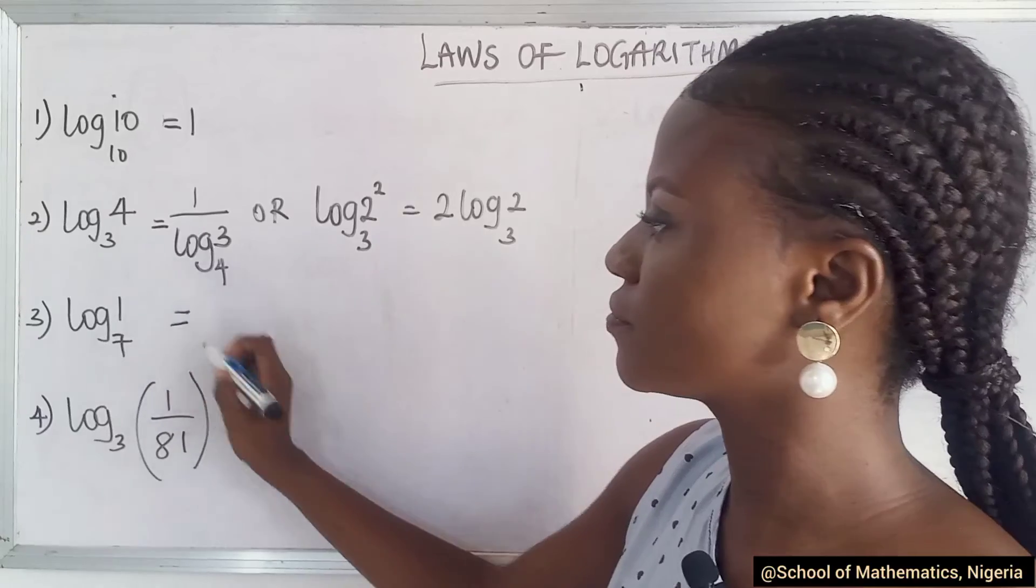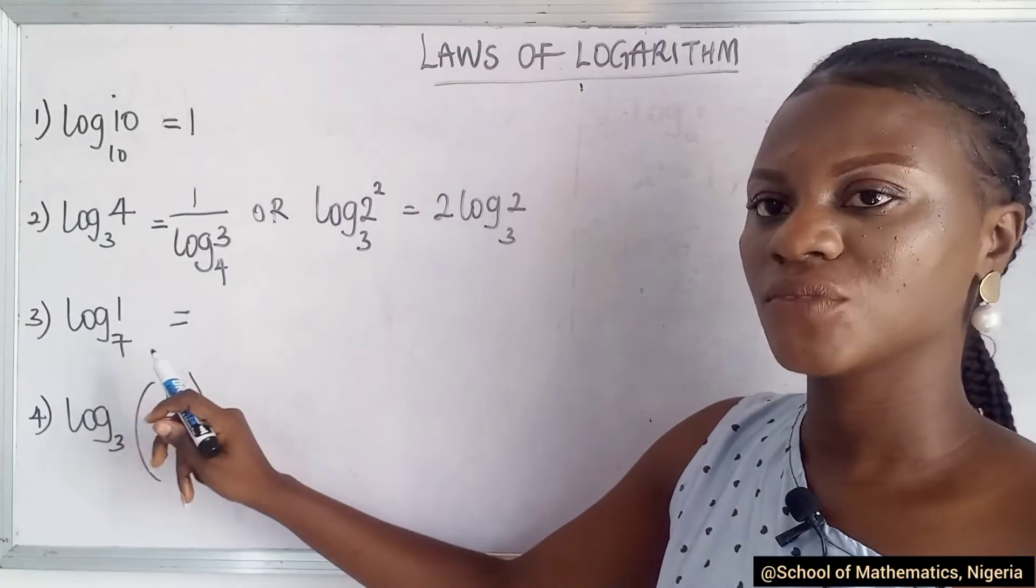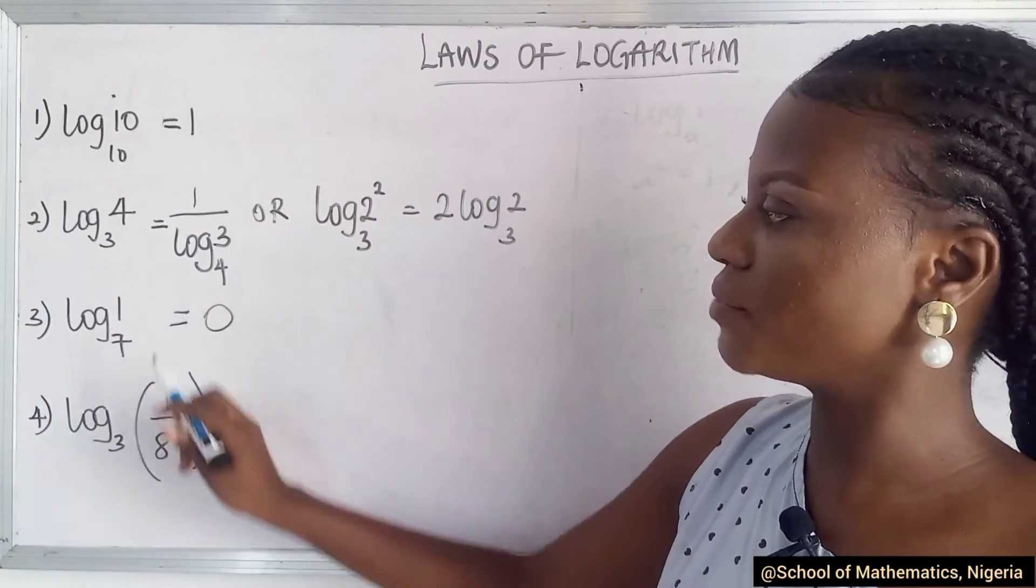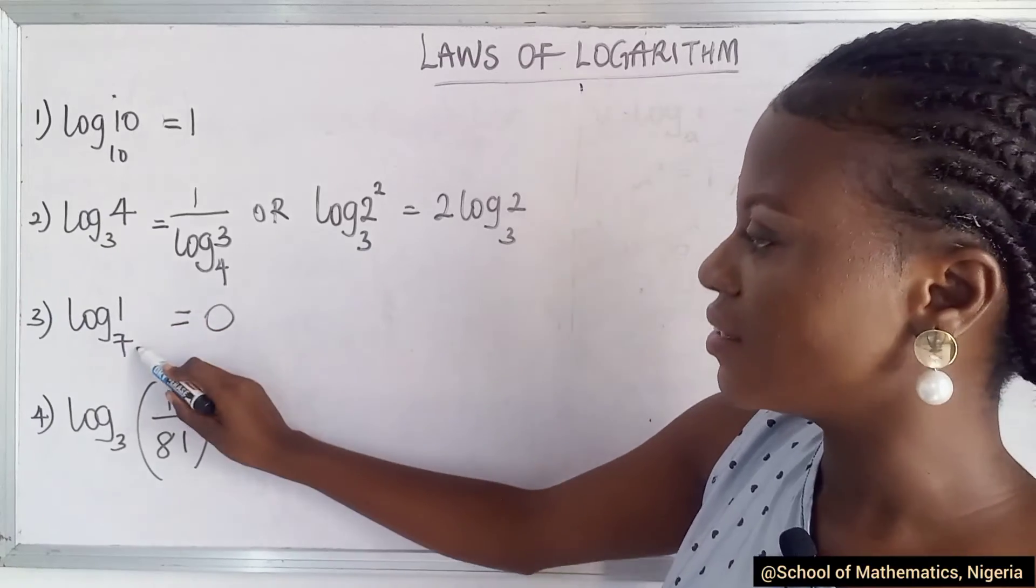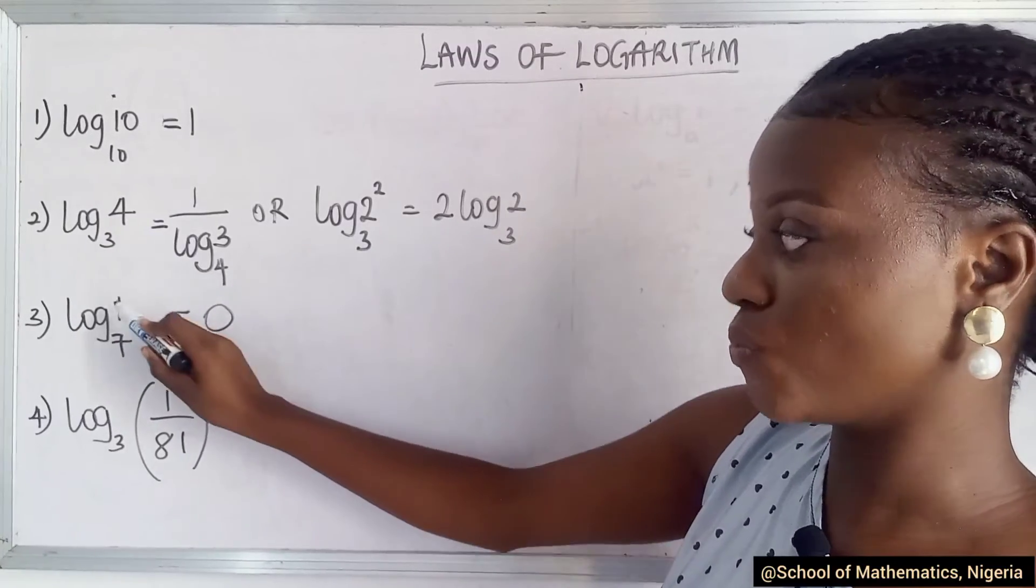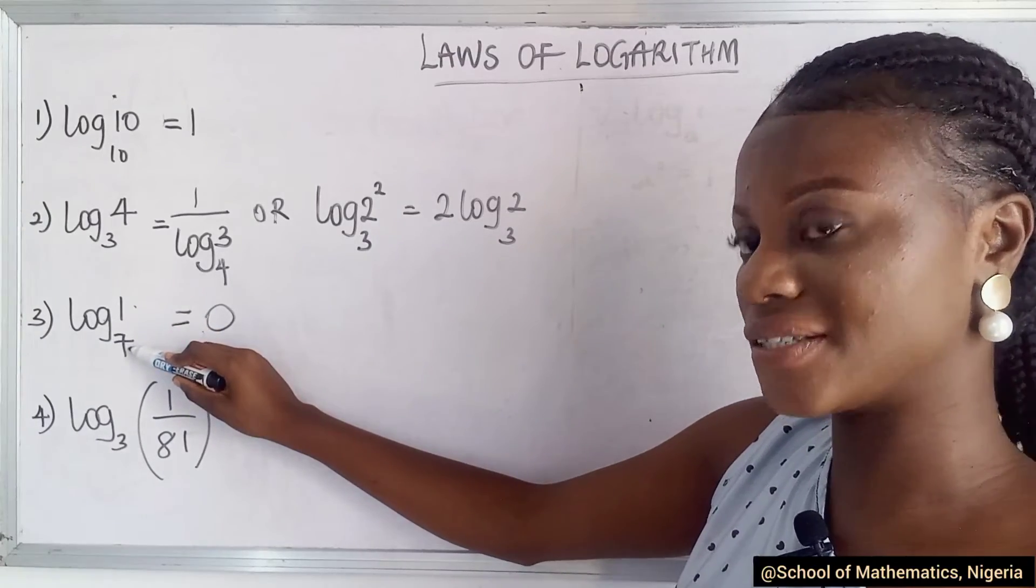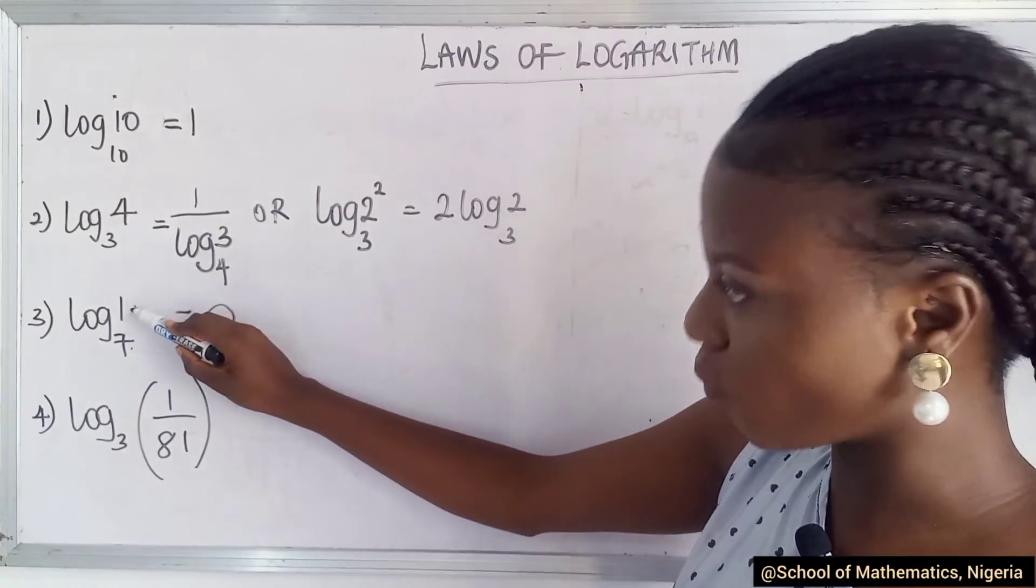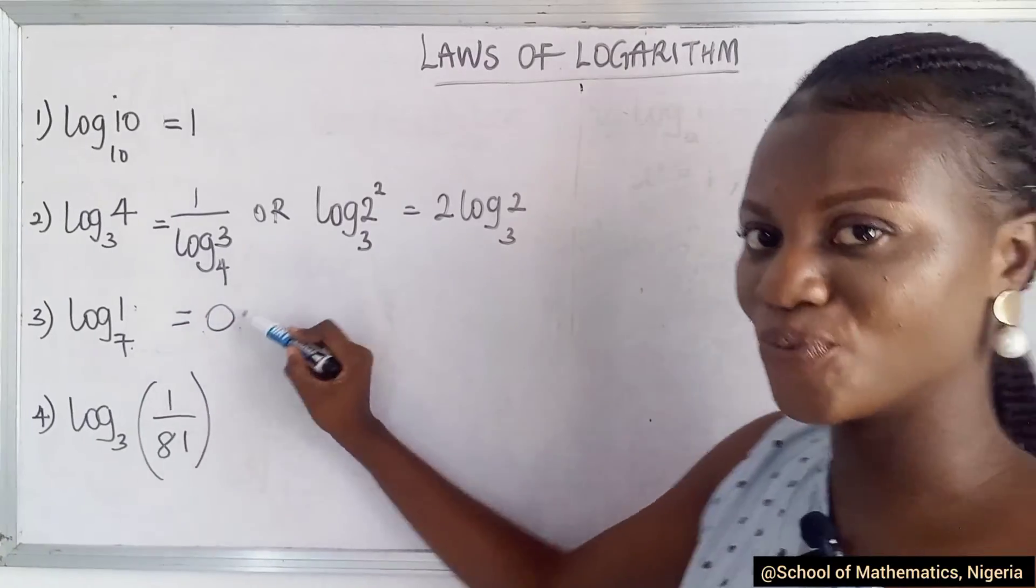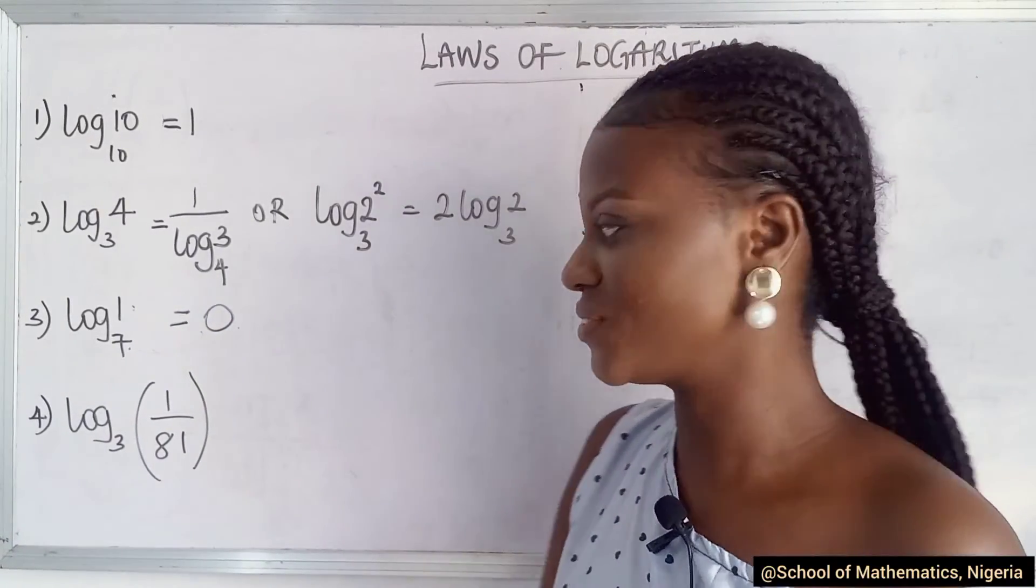So moving to the next one, we have this, which will give us zero. Why? Because there's one here. Seven raised to the power of zero is one. So log to the base of a value, which has to be greater than zero and not equal to one, of one would give zero. I hope that made sense. I hope you understood that.